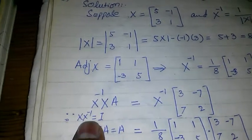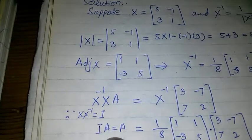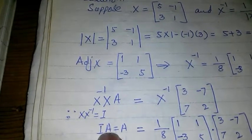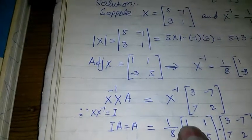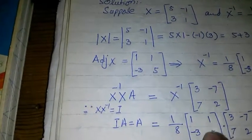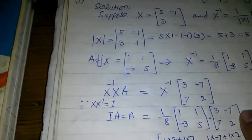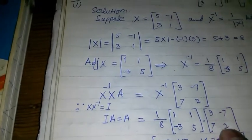We know that X inverse times X equals the identity matrix, so I times A equals A. Therefore, A equals 1/8 times [1, -3; 1, 5] multiplied by [3, -7; 7, 2].